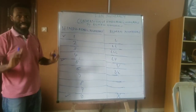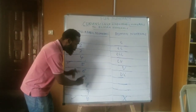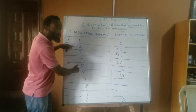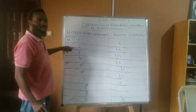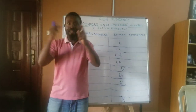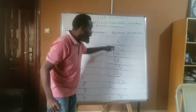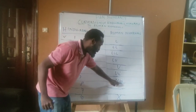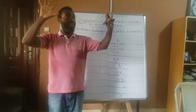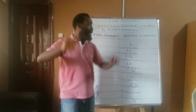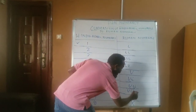The next one is 7. That gives us 5 plus 2 — V plus II — and that gives us VII. Number 8 gives us 5 and 3, so V plus III, and that gives us VIII.